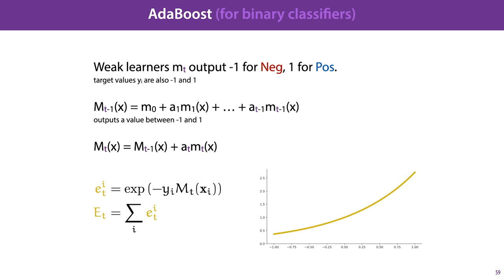The error of a particular instance we defined as the negative exponential of the target label times the model output. y times MT, if the model gets the label exactly right, is either one times one or minus one times minus one. So the input to the exponential becomes minus one and the error is low. And if the model gets the classification exactly wrong, y times m is either minus one times one or one times minus one. So the input to the exponential becomes one and the error is large. We sum up all the errors over our data set, and take that as our total error which we want to minimize.